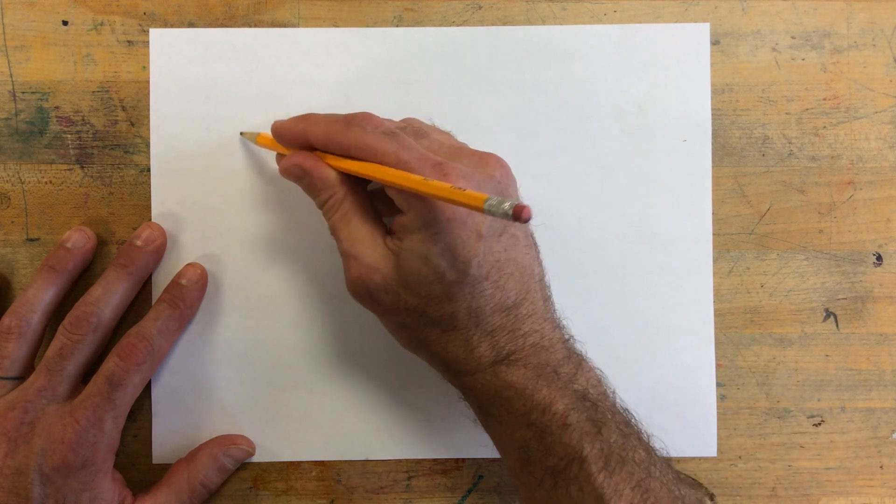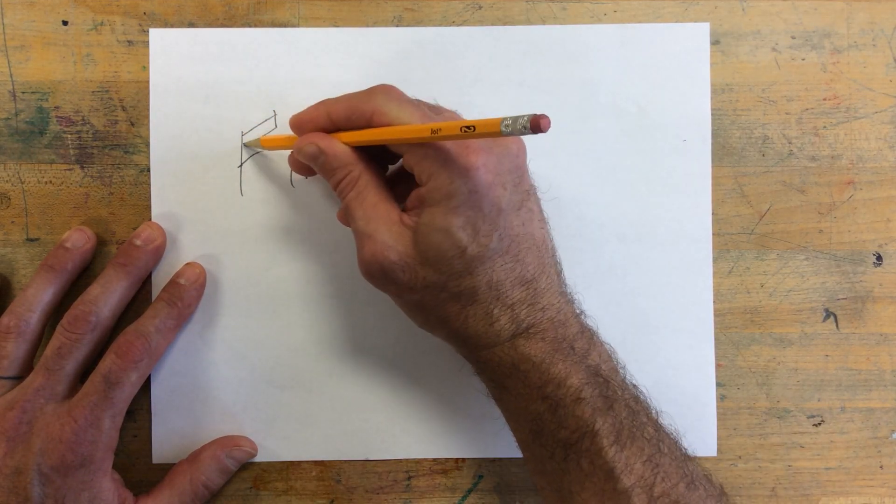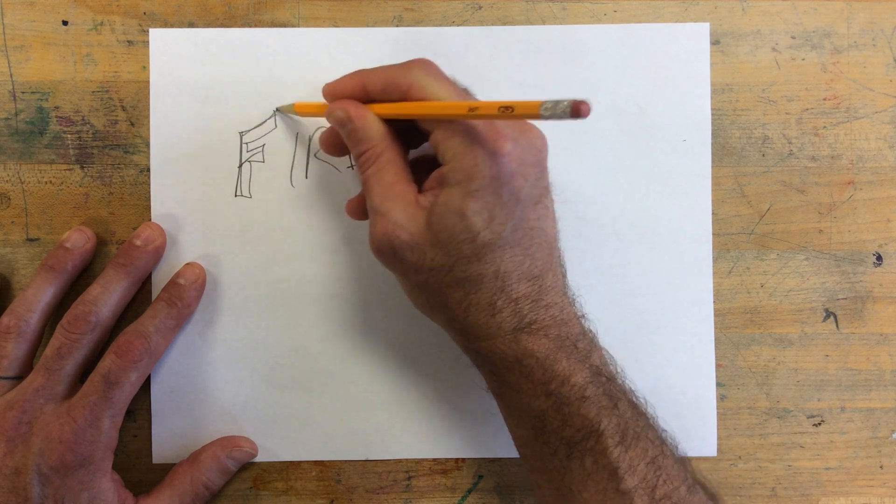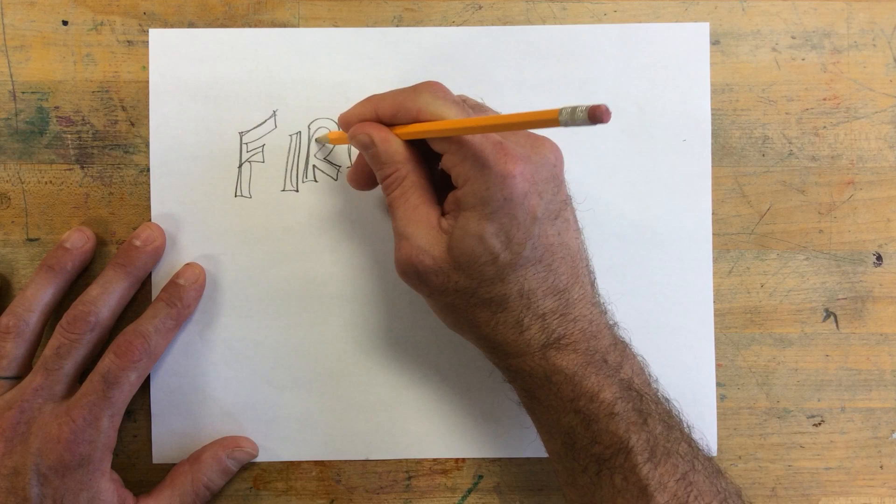All right, so now we're going to look at how to create words out of different materials. For instance, if I had the word fire and I change that into block letters by tracing around it.